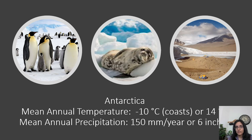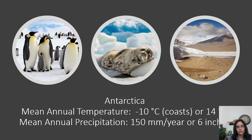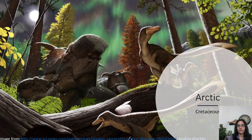One reason for these differences is that the Arctic is basically an ocean surrounded by land, whereas Antarctica is a large continent surrounded by ocean, and that difference in geography affects the climate. So what about during the Cretaceous period?